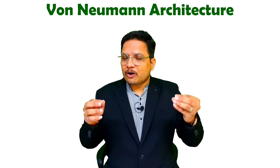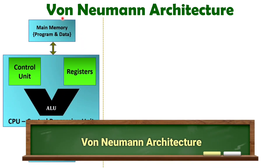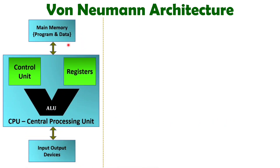Let us see all those things step by step. When we talk about Von Neumann architecture, we have a memory which holds both the program and the data. By the same system bus, we access both the program and data with the CPU. That is why this architecture is referred to as Von Neumann architecture — main memory holds program as well as data, and that is accessed by a common system bus.